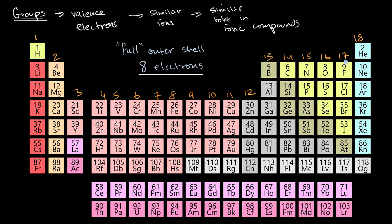If we go one group to the left of the noble gases, we get to the halogens. The halogens have seven valence electrons, so they're only one electron away from having an electron configuration like the noble gas to the right of each of them. These halogens really like to attract electrons to form a negative ion or an anion. So you will often see fluorine as a fluoride anion with a negative one charge, or chlorine as the chloride anion with a negative one charge. You'll also often see iodine gain an electron and have a negative one charge.